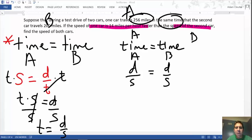Just remember that the left-hand side is for car A. And the right-hand side is for car B.